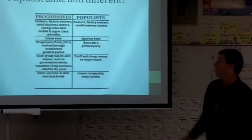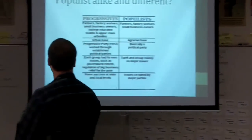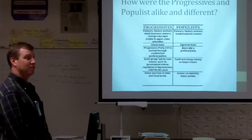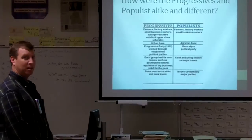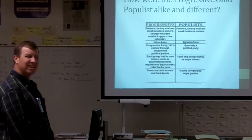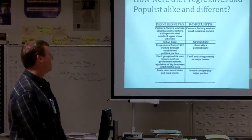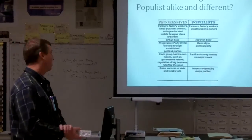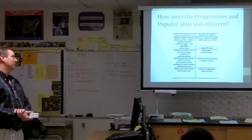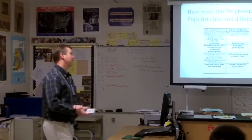Who are the people that make up each group? The populists: farmers, factory workers, small business owners. The progressives: farmers, factory workers, small business owners — but also college educated, middle and upper class. So the overlap is the farmers and factory workers — regular working people. Meanwhile the progressives also got some of the middle and upper class involved. The progressives were urban-based; the populists were agrarian-based.